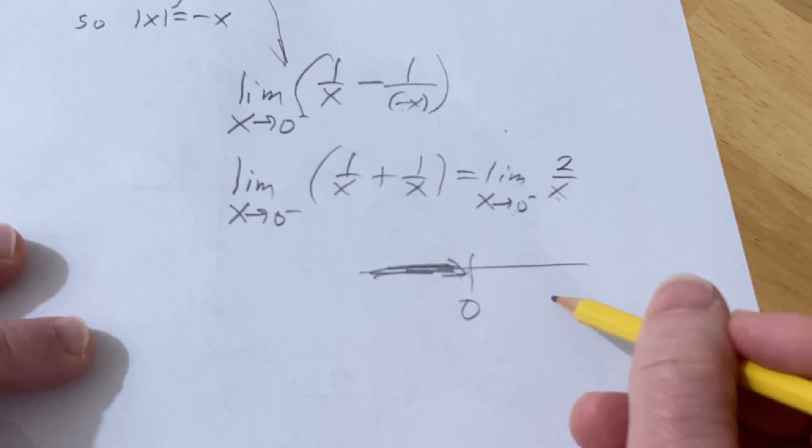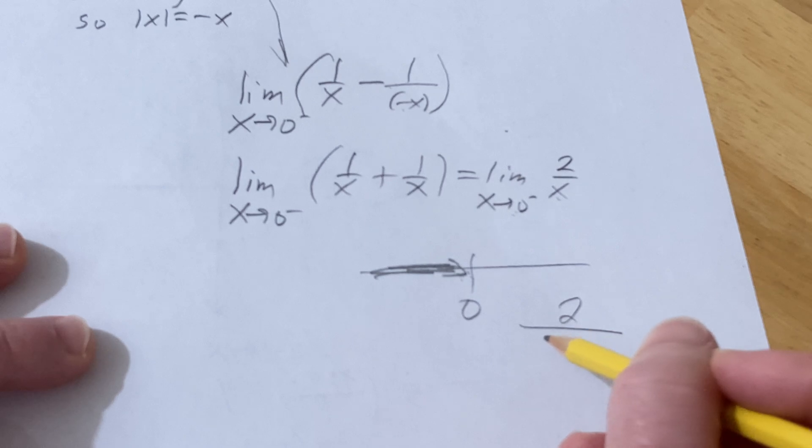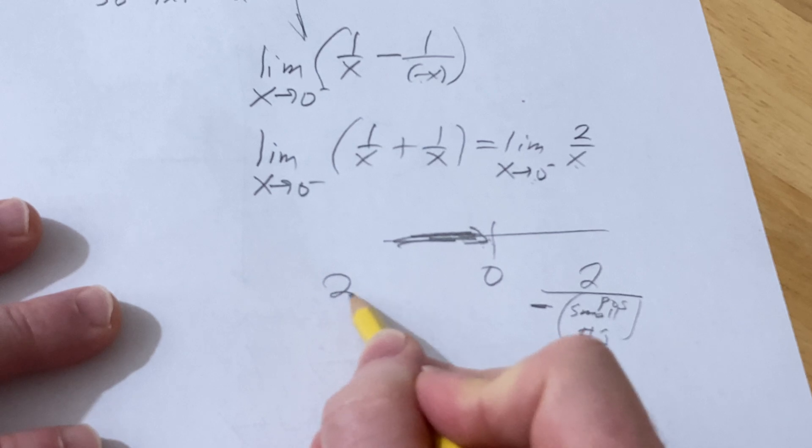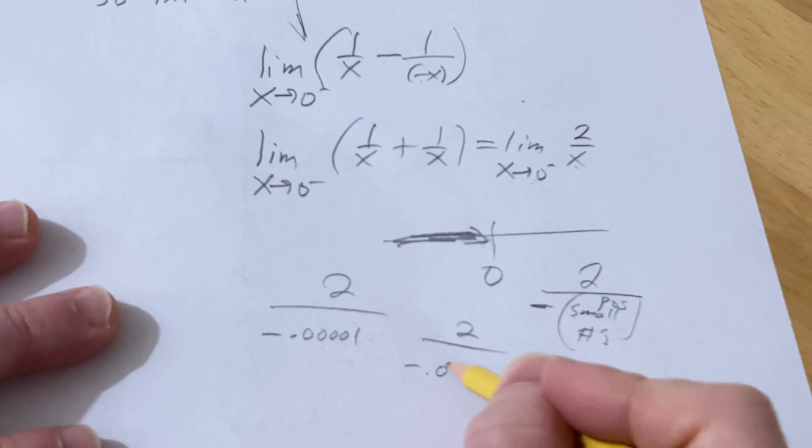So basically what you have here is a 2 over small numbers that are positive, except they're not really positive because there's a negative here. So you're going to get something like 2 over negative 0.00001, or 2 over, it's going to get smaller and smaller and smaller, so it's a limit, so you're getting infinitely close to 0.